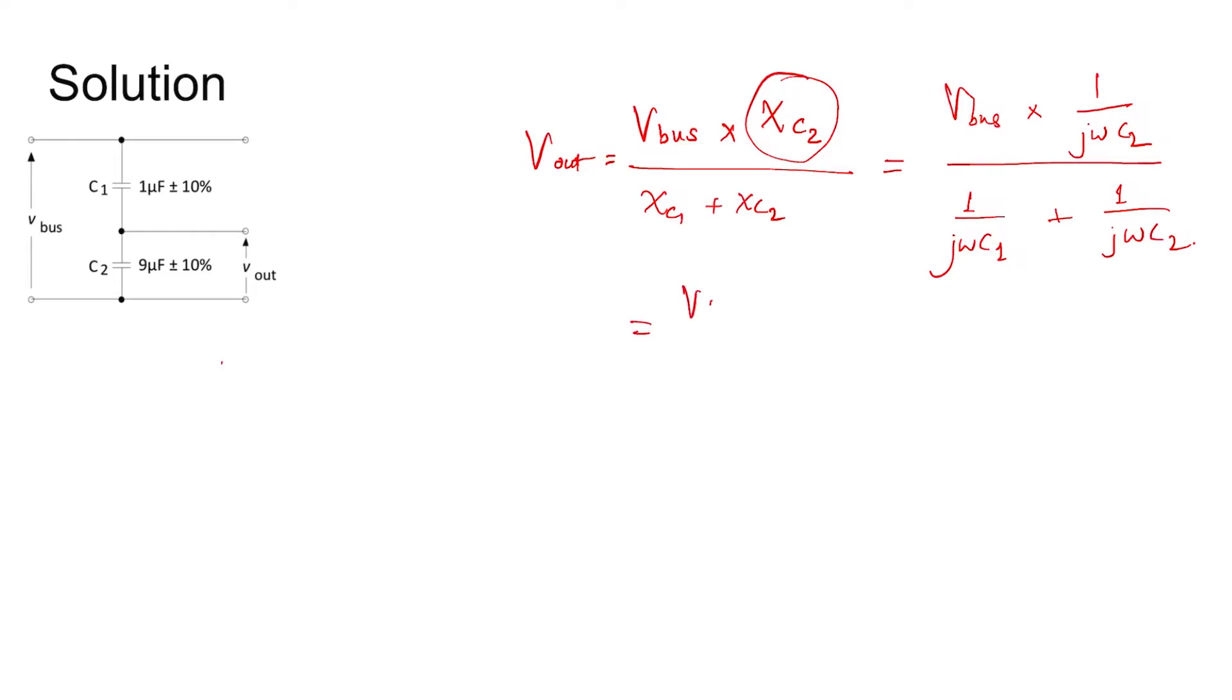This becomes V_bus by C2 divided by (1 by C1 plus 1 by C2), equal to V_bus by C2 into C1C2 divided by (C1 plus C2). So this is coming as V_bus C1 divided by (C1 plus C2).